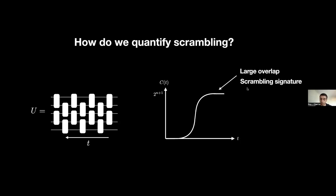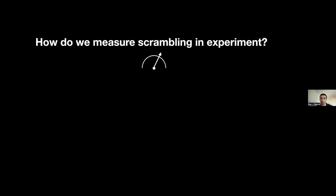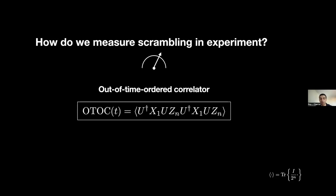We have a function which can quantify scrambling. The next question is: practically, how can we measure scrambling in an experiment? People typically use a function called the out-of-time ordered correlator, or the OTOC for short. The OTOC is a correlation function which contains U — the unitary doing our evolution — and also the Pauli X and Z operators from the commutator norm definition. It's called out-of-time ordered because of the strange ordering of U and U dagger: U, U dagger, U, U dagger, where U dagger represents backwards time evolution.